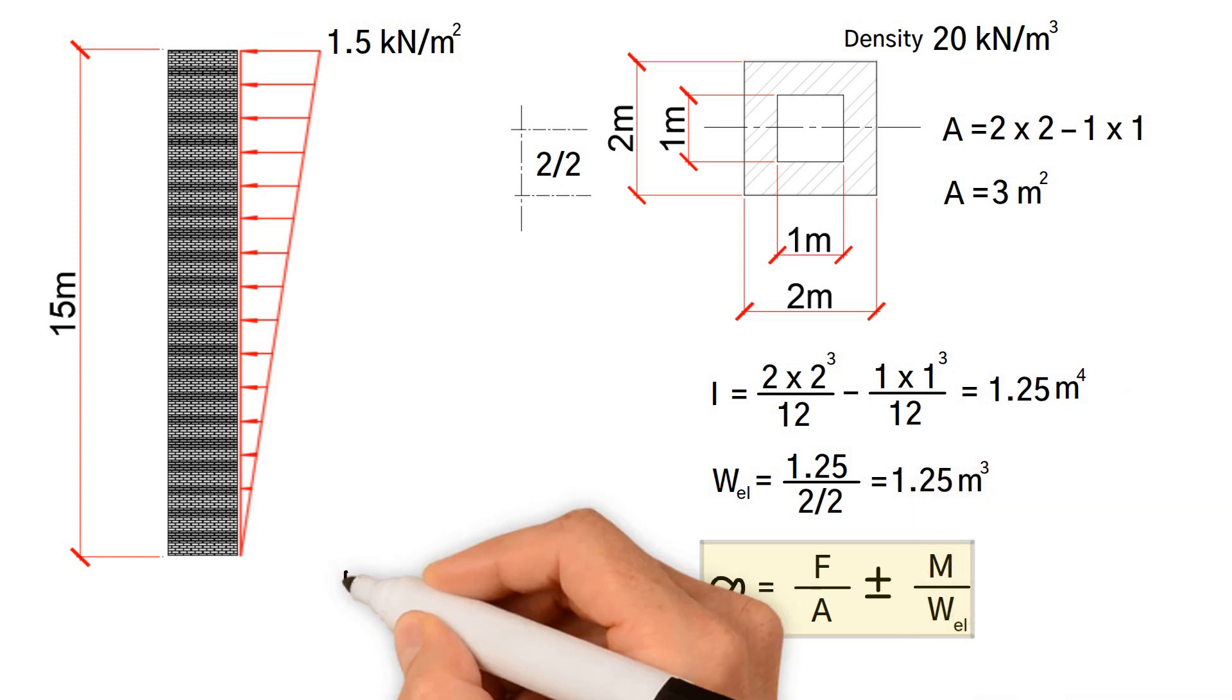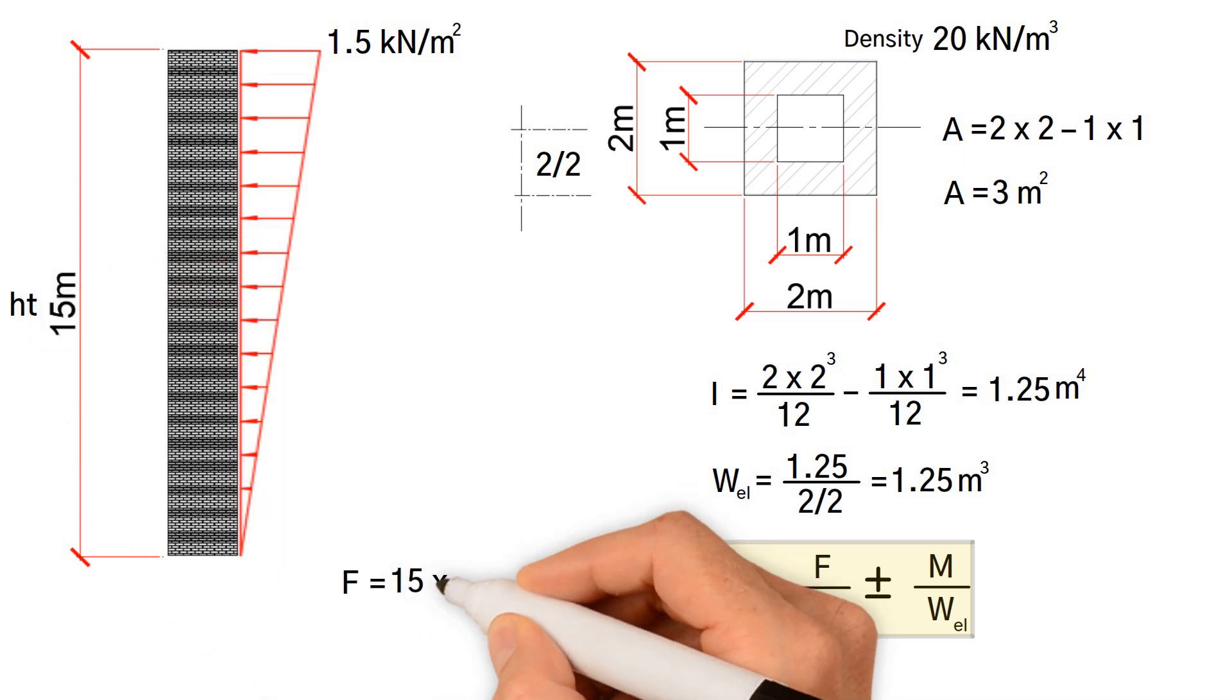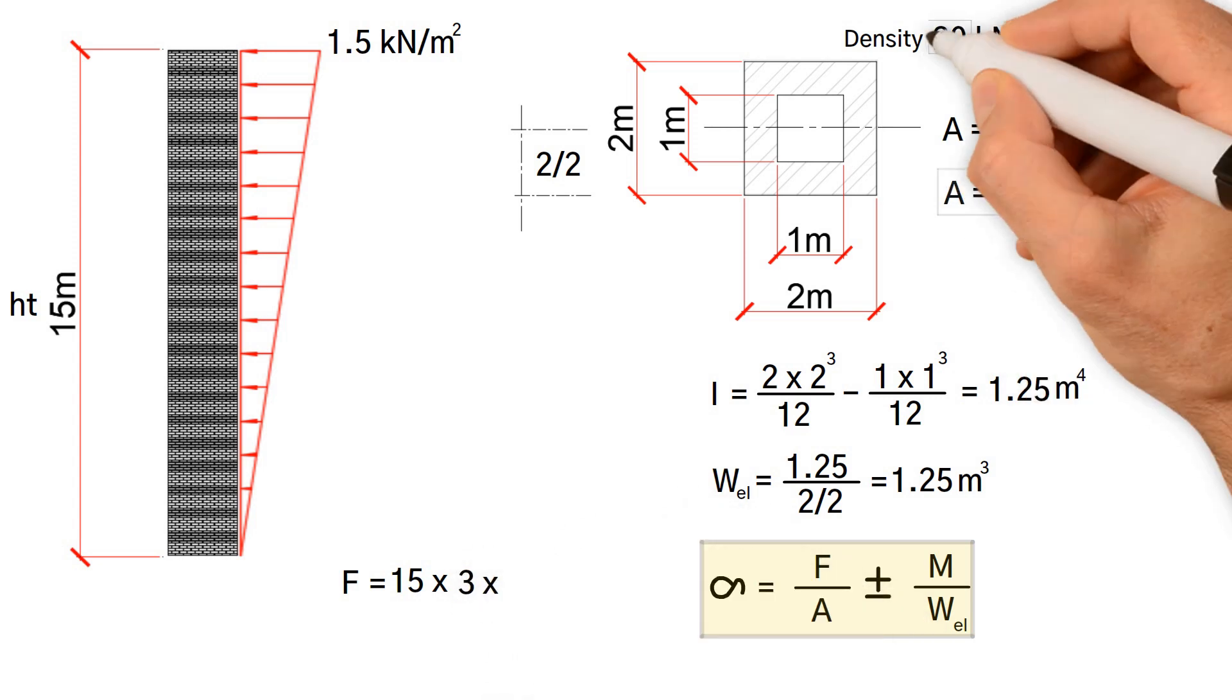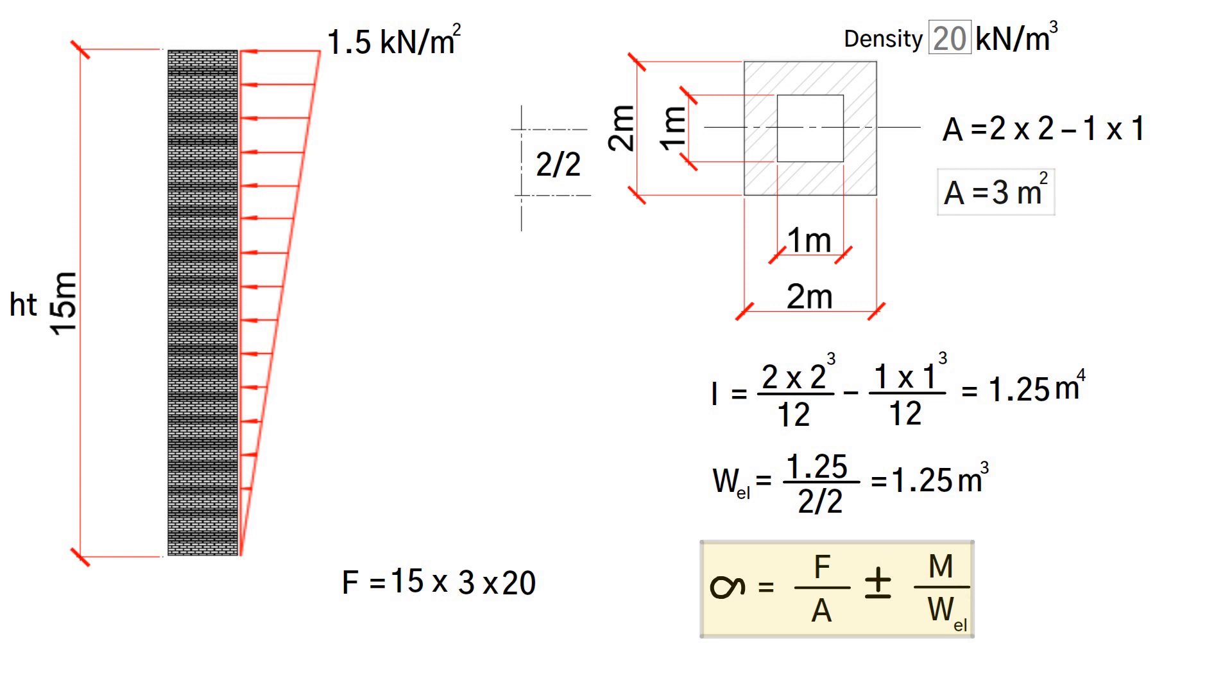Next, we need to work out the total weight of the chimney, which equals the height 15 meters times the area of section 3 meters squared, multiplied by the density of the brickwork 20. This gives us the value of 900 kilonewtons.